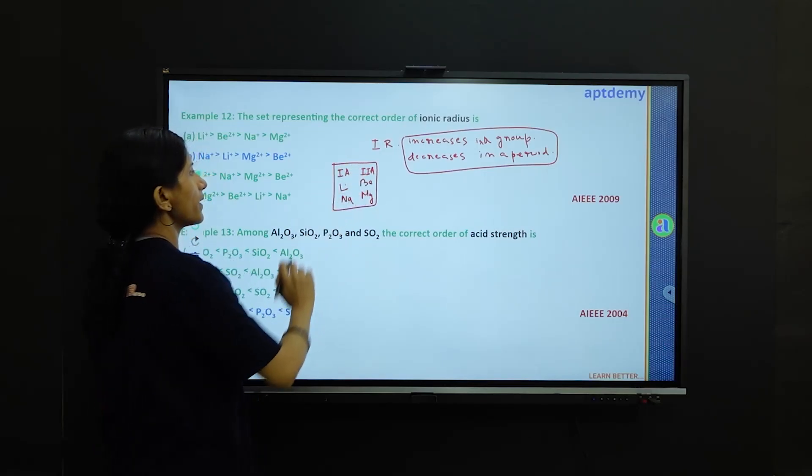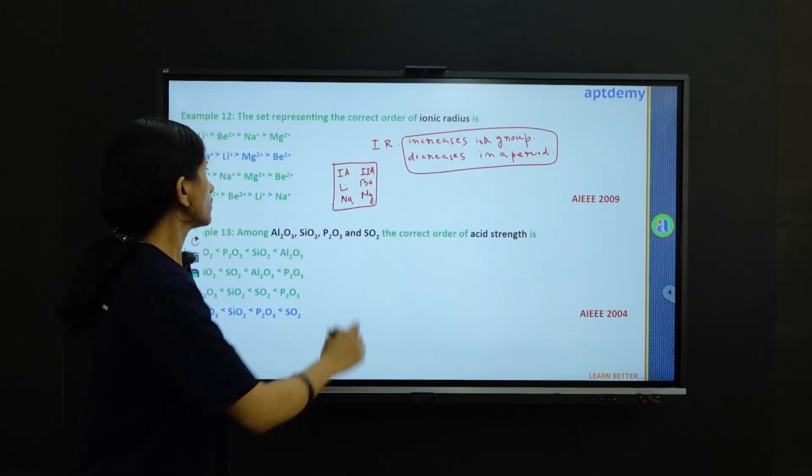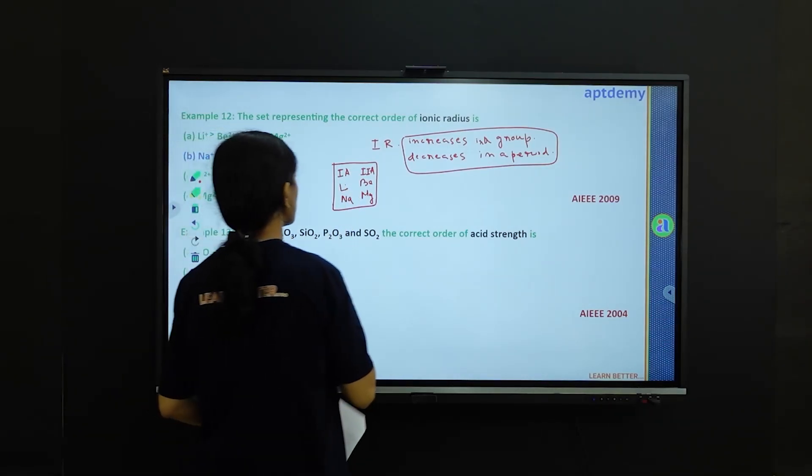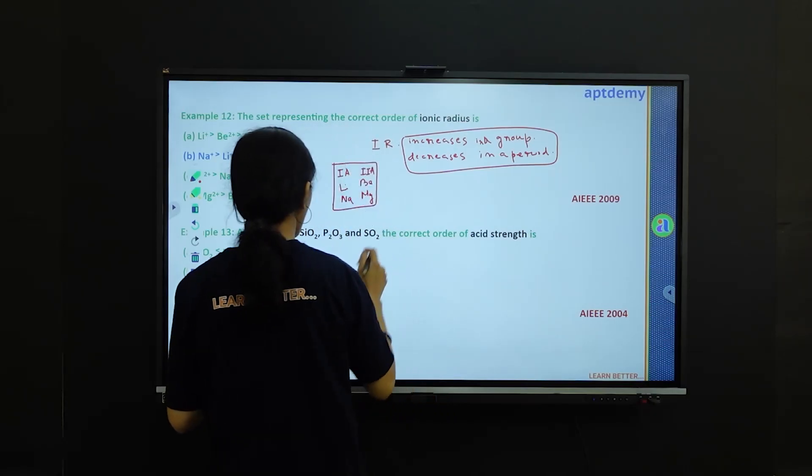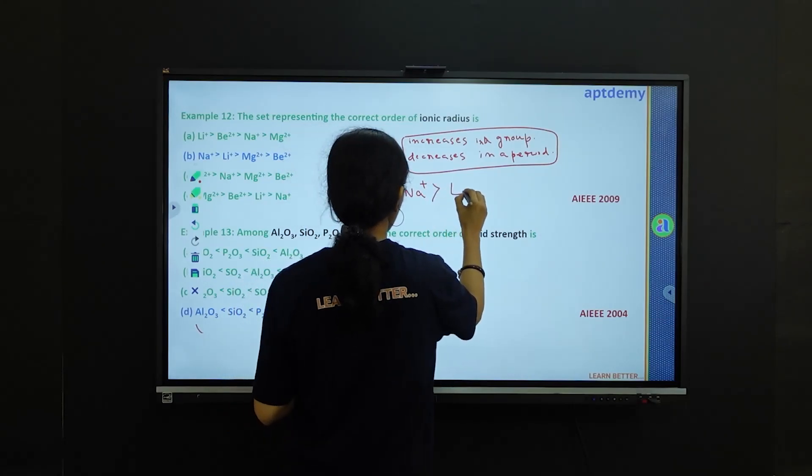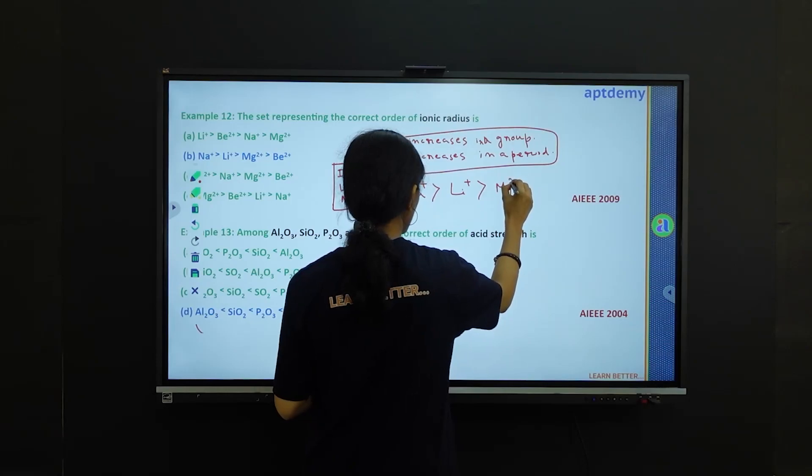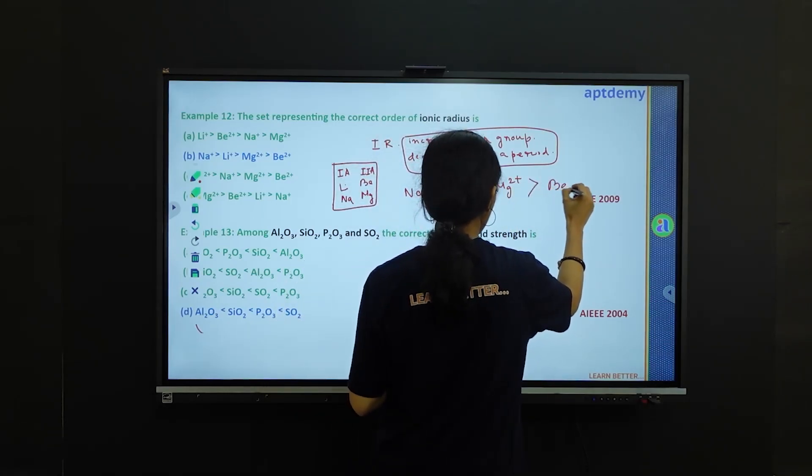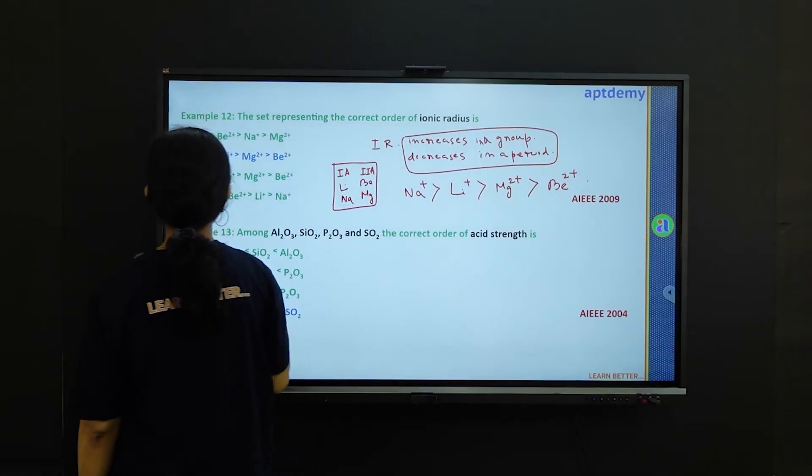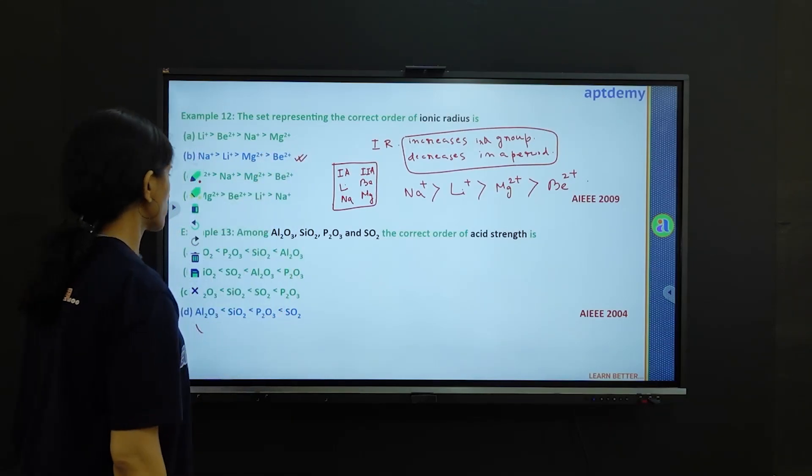And if you know the exact positioning of the elements in periodic table with group 1A and 2A elements, we can easily get the trend as Na plus is greater than Li plus is greater than Mg 2 plus is greater than beryllium 2 plus. So if you check the options, option B is the correct option.